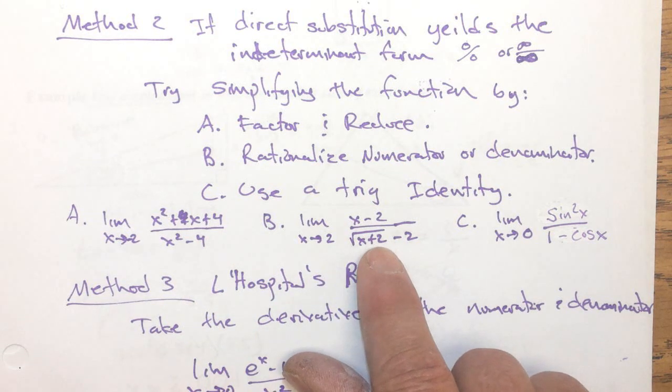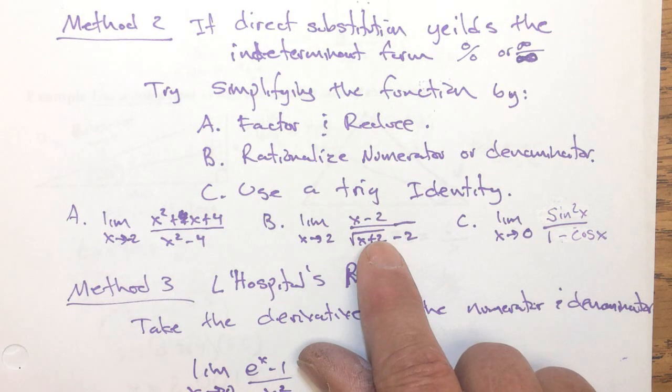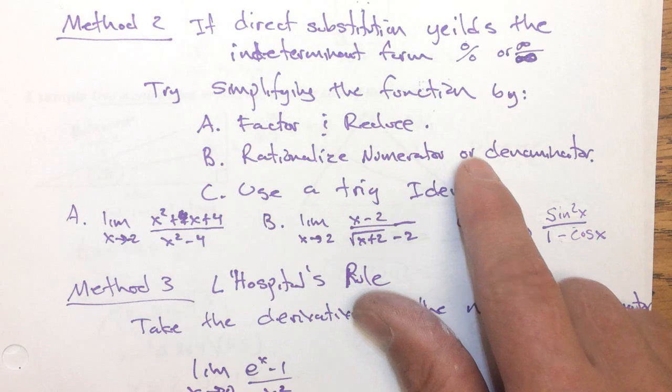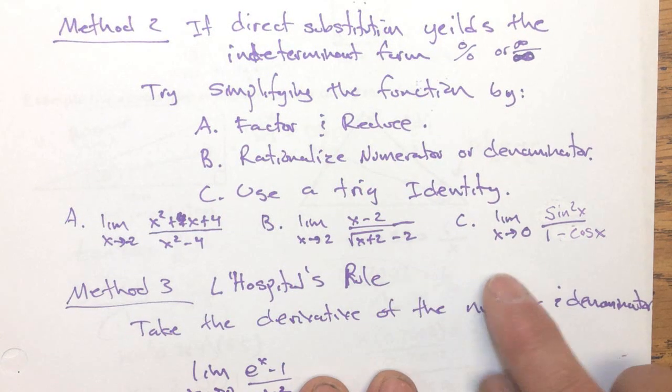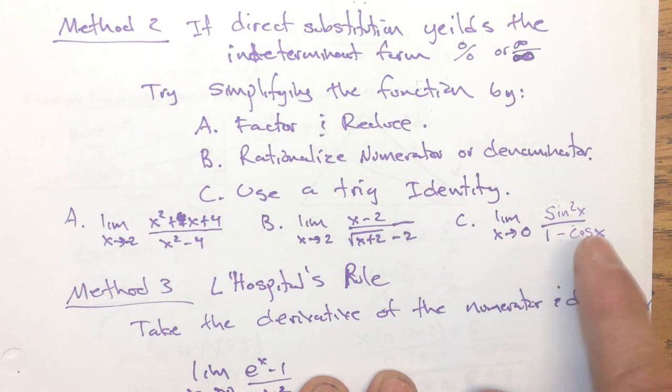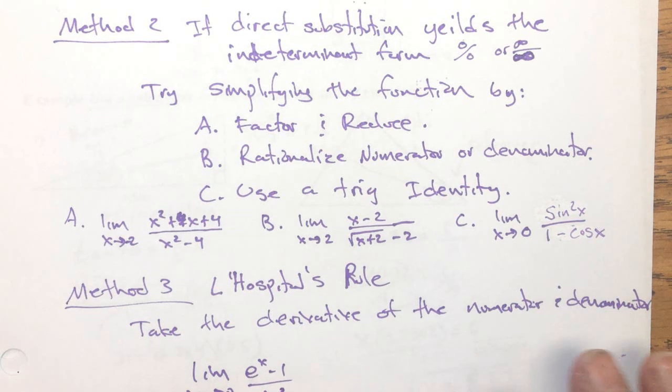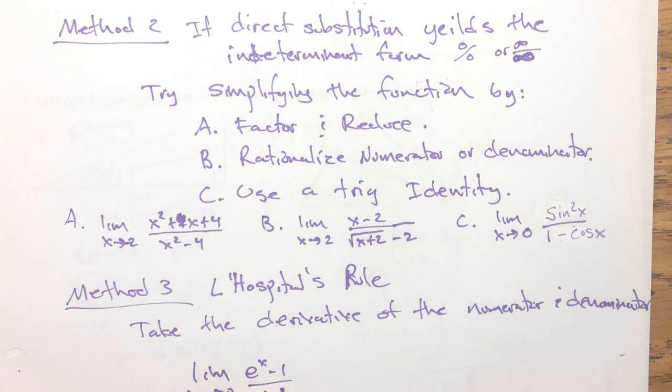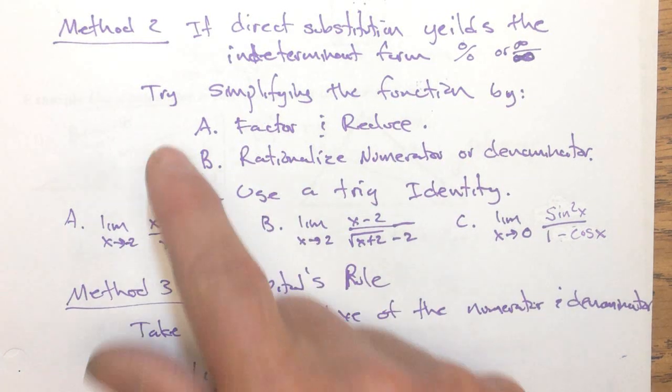For b, you have that square root. So, when you get the indeterminate form, try rationalize the denominator. See my posted PDF for the solutions there. And this one, same thing. And that's basically what we did for method two, is basically to simplify the function.